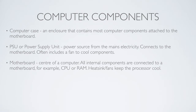There is also a processor. A processor basically processes all of the information and everything in the computer, and it is one of the main parts. Most processors at the time of making this video are probably 2 or 3 gigahertz. About 10 years ago, 500 megahertz was a good amount. Processors roughly double in power every 3 years, though these results might change when computers require nanotechnology to build them.